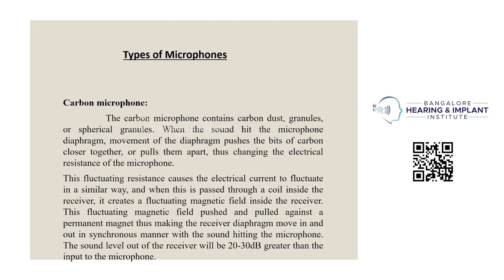Types of microphones: the carbon microphone contains carbon dust granules. When sound hits the microphone's diaphragm, movement of the diaphragm pushes the bits of carbon closer together or pulls them apart, changing the electrical resistance of the microphone. This fluctuation in resistance causes the electrical current to fluctuate in a similar way. When this is passed through a coil inside the receiver, it creates a fluctuating magnetic field that pushes and pulls against a permanent magnet, making the receiver diaphragm move in and out synchronously with the sound. The sound level out of the receiver will be 2 to 30 dB greater than the input to the microphone.